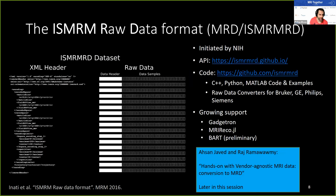This brings us to the ISMRM raw data format, which is a pretty young format but is becoming common with growing support from other software projects. It was initiated by the NIH and developed by a subcommittee of the ISMRM Sedona workshop — first as the ISMRM-RD format, now shortened to MRD. The API, code examples, and raw data converters can be found on GitHub. A dataset consists of protocol information and actual raw data stored together with metadata. There will also be a hands-on session later.